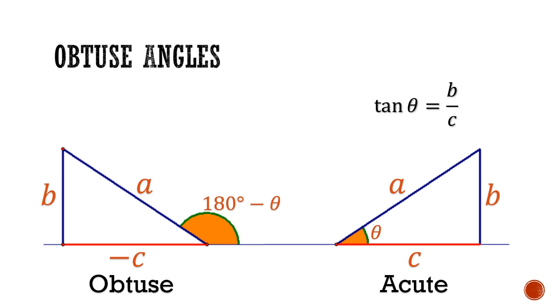As for the tangent ratio, we can follow the same line of argument to conclude that tangent 180 minus theta is equals to negative tangent theta.